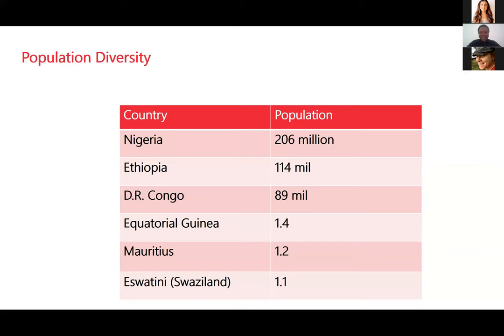Then there are very small countries like Eswatini with 1.1 million — basically about a quarter of the Greater Toronto Area. Mauritius has 1.2 million, Equatorial Guinea 1.4 million. So there are very small countries in terms of population, and there are the big ones. The biggest in terms of population is Nigeria. Countries like Egypt are also very large.